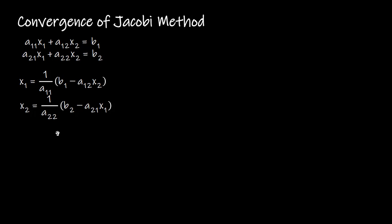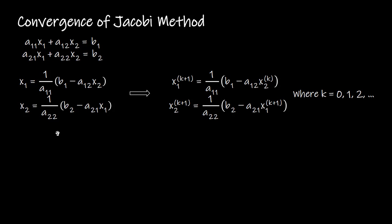Once we have these solution expressions, the Jacobi iterative scheme is constructed by raising the superscript k+1 on the left-hand side variables. On the right-hand side of the first equation we raise the superscript k on X2, and we use the k+1 approximate solution of X1 from the first equation in the second equation. Here k takes the values 0, 1, 2, 3, and so on.